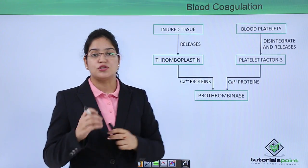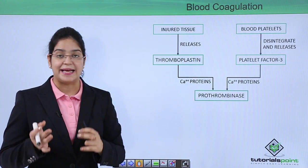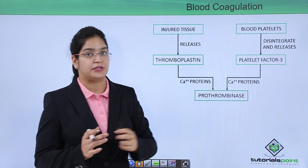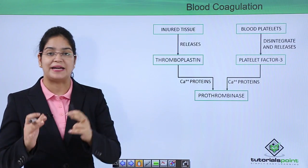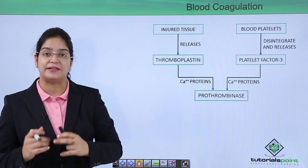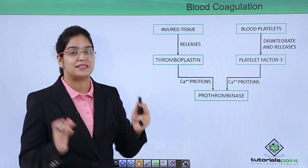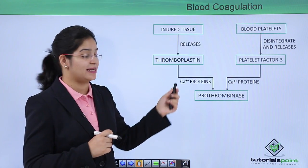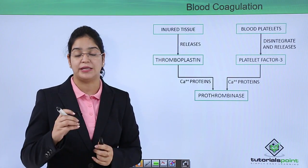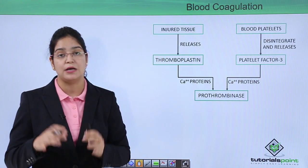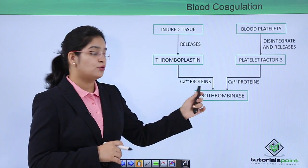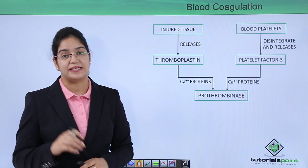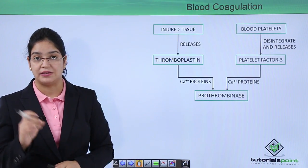Blood platelets also disintegrate and release platelet factor 3. This platelet factor 3 and thromboplastin combine in the presence of calcium and proteins in the plasma to make prothrombinase. This prothrombinase is very important in blood clotting.